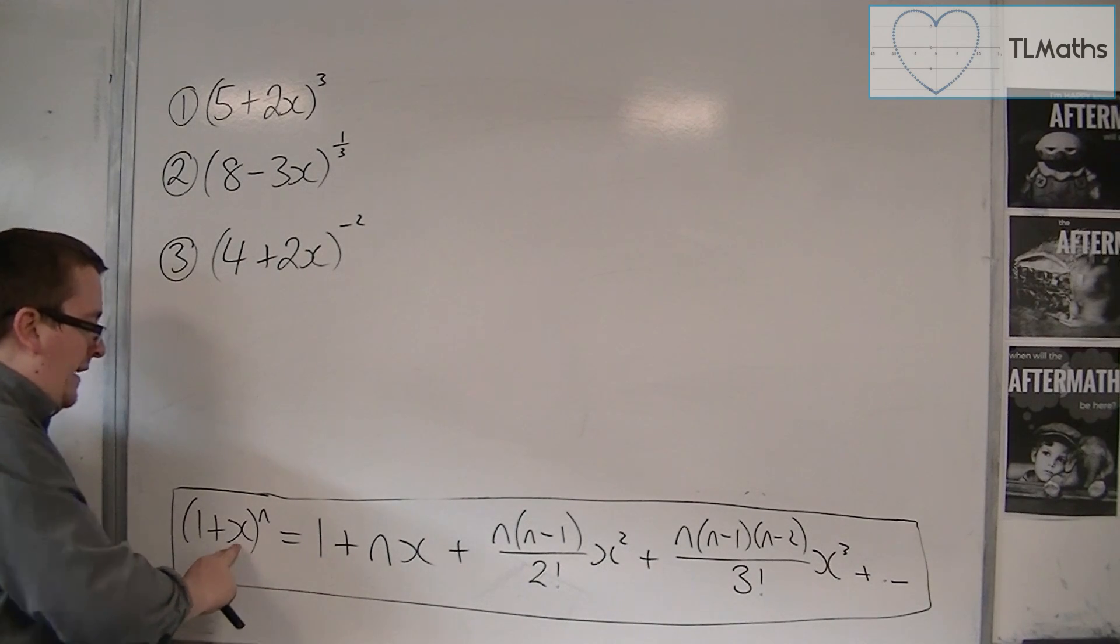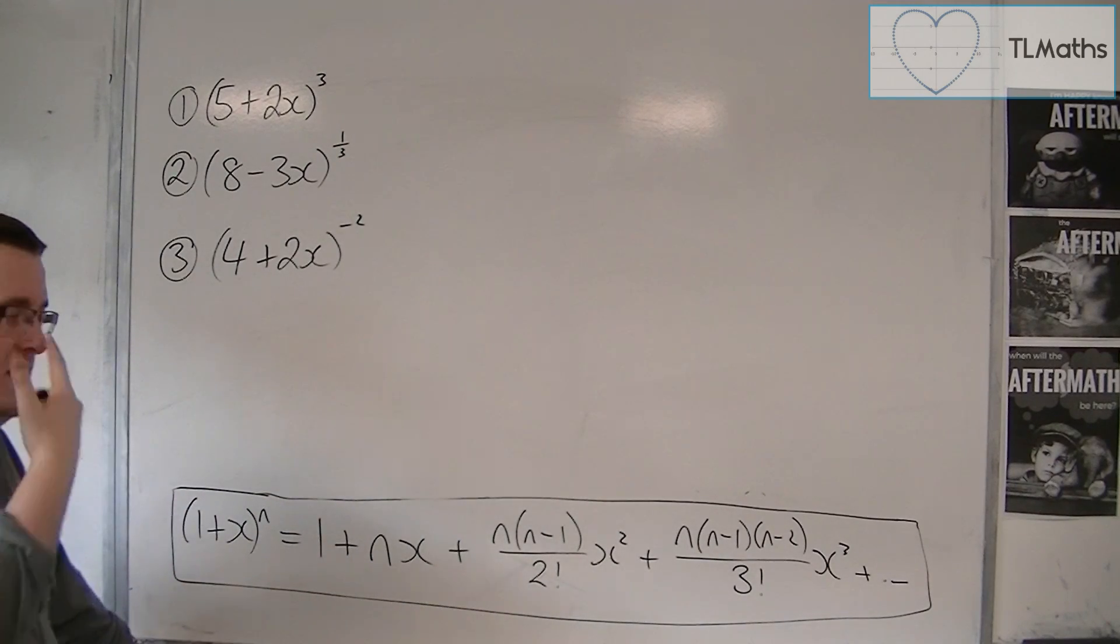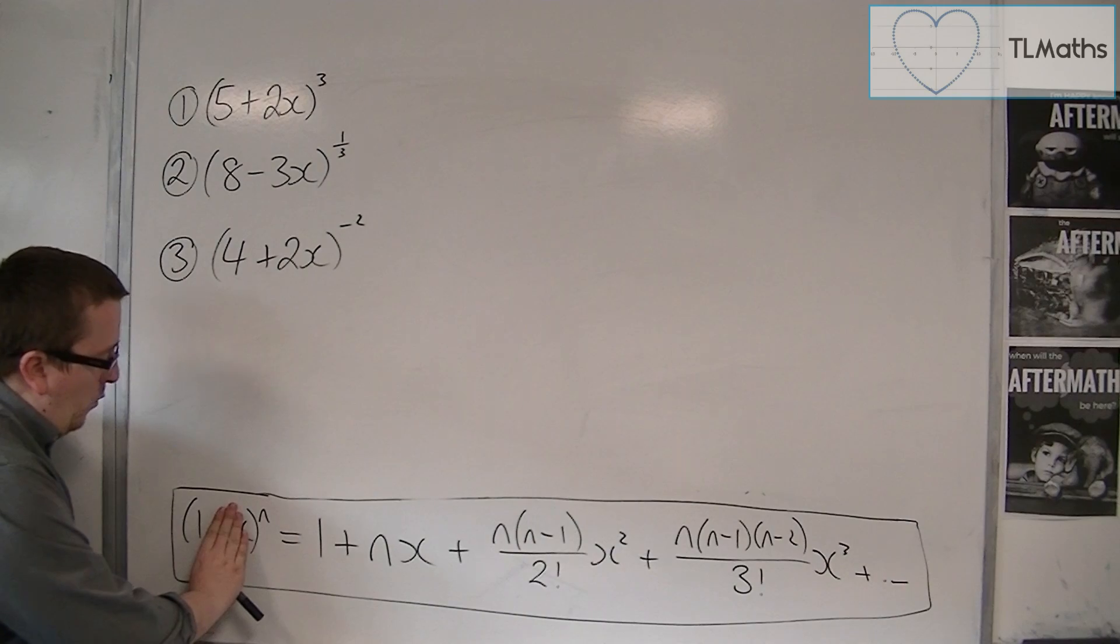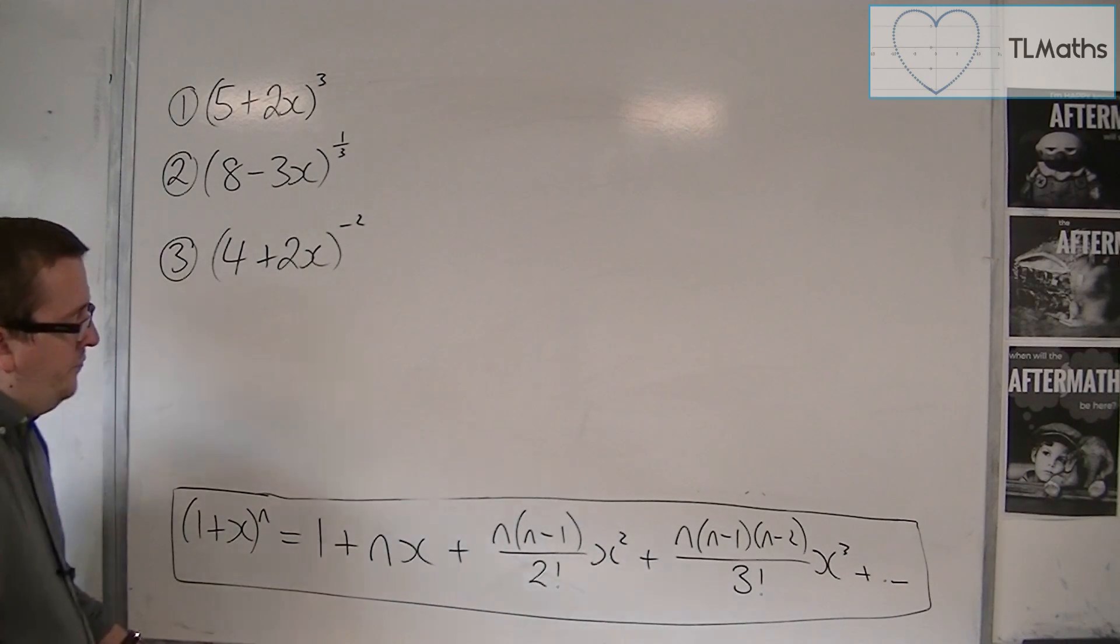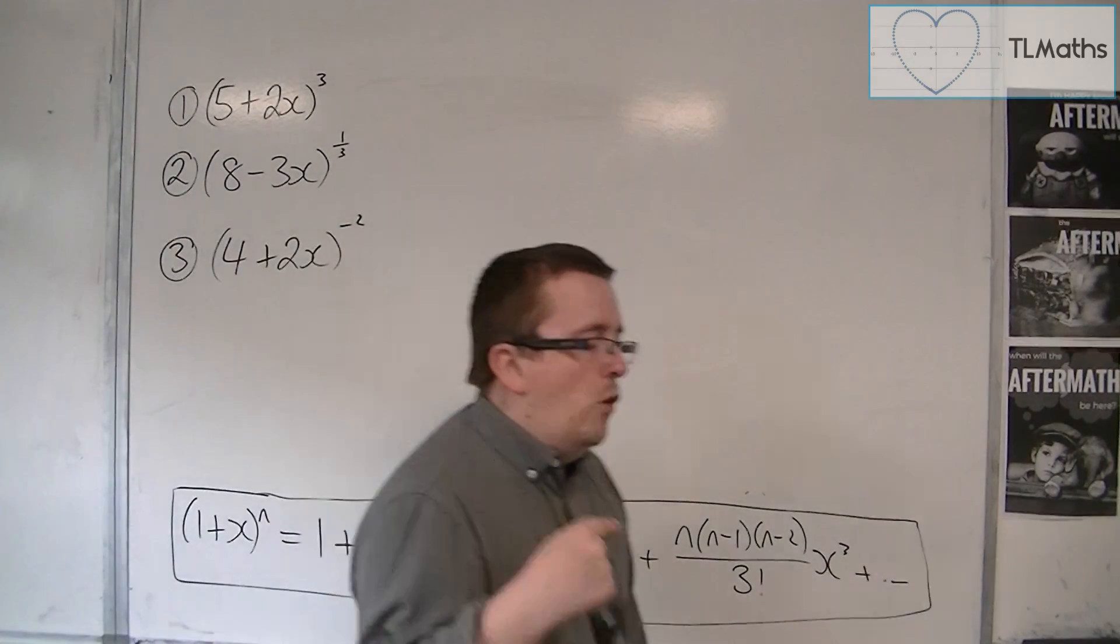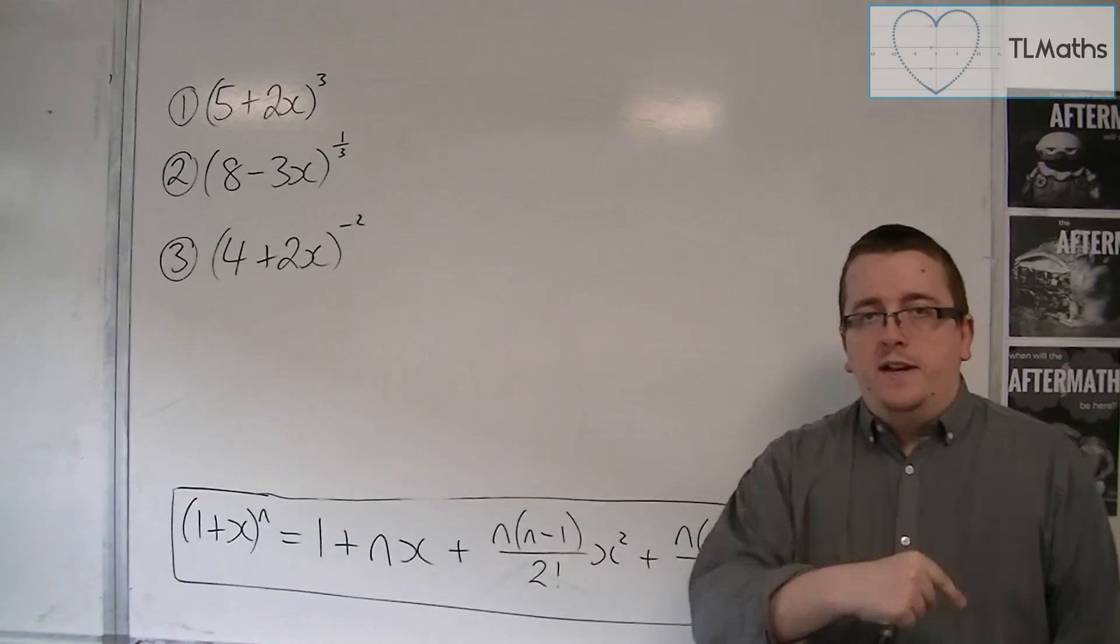It could be 1 plus 2x, or 1 plus x over 3, that doesn't matter, because you'd be substituting 0 in, and you'd still get 1 to the n. So, it only works if you've got 1 plus something, or 1 minus something.